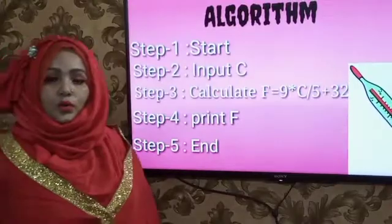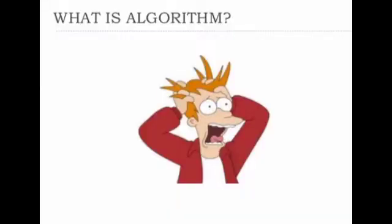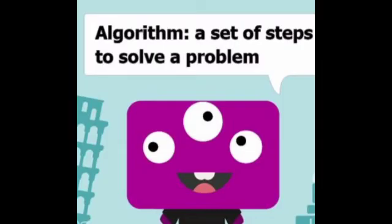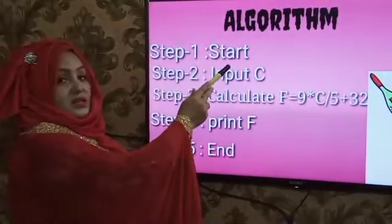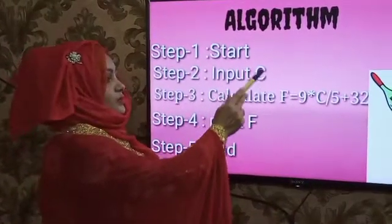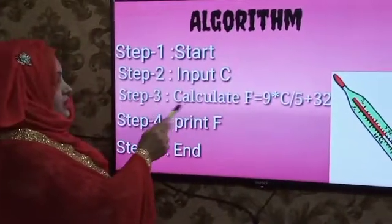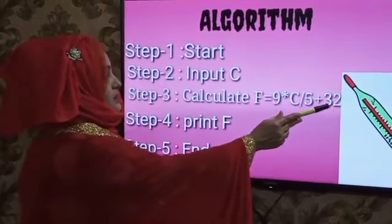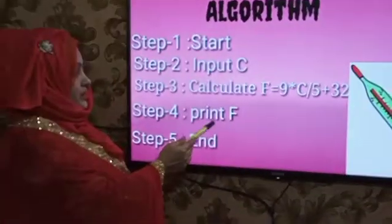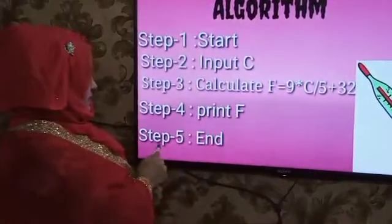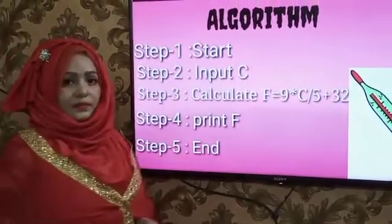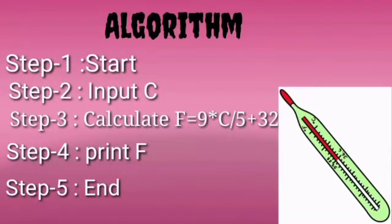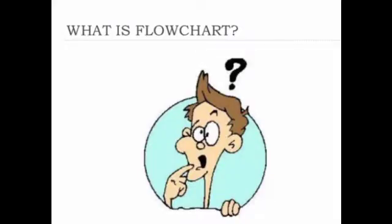Now we can see the algorithm. What is algorithm? Step 1: Start. Step 2: Input C — C for Celsius or centigrade. Step 3: Calculate F using the Fahrenheit formula — F equals 9 into C divided by 5, plus 32. Step 4: Print F — this is the output. Step 5: End — finish the algorithm.